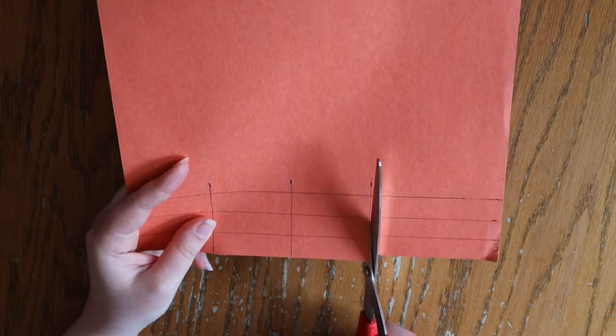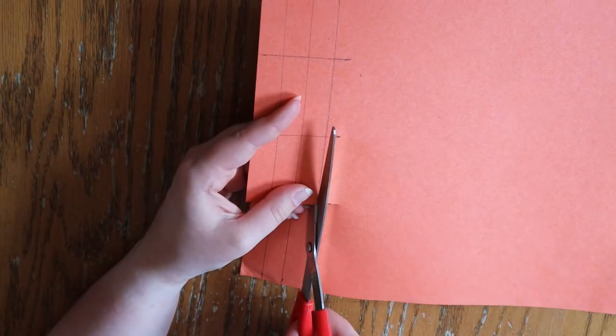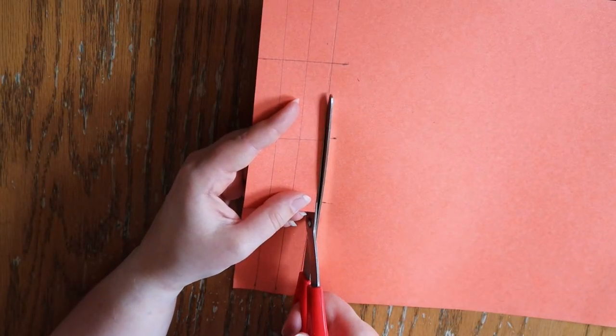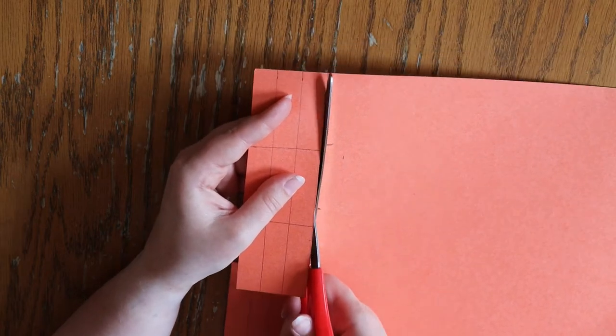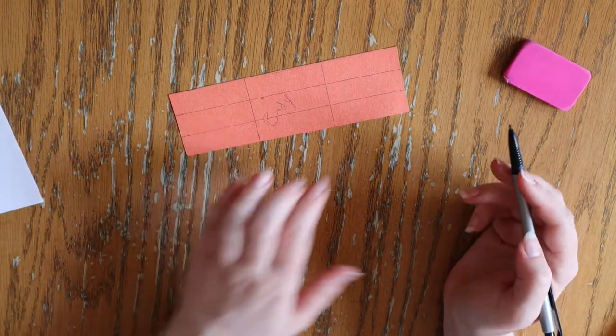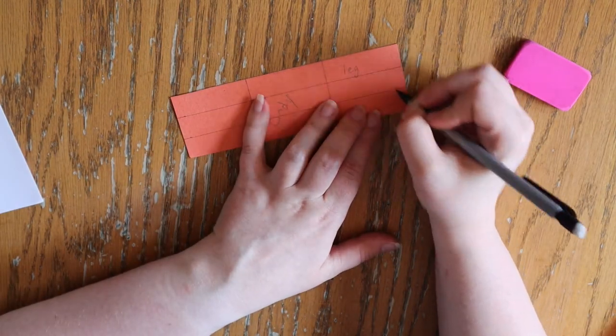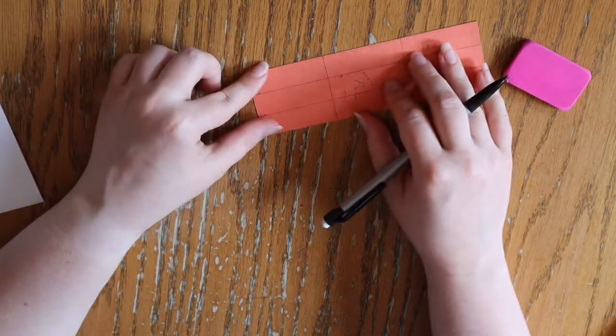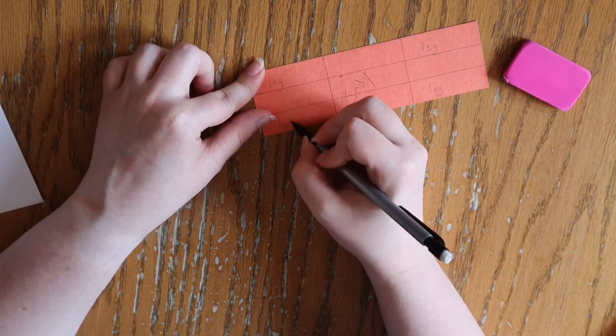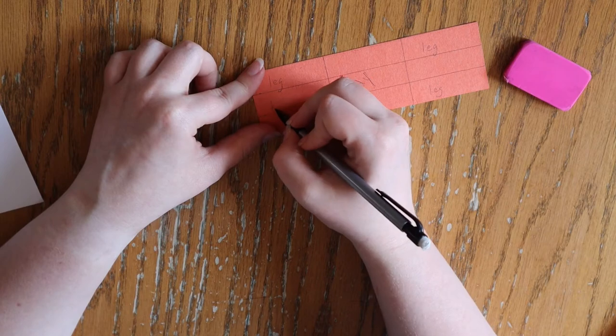After you connect the lines, you can cut out your shape. Like the previous diagram showed you, the four outer corners will be the legs, the middle section is the body, and the two inner pieces will be the head and tail.